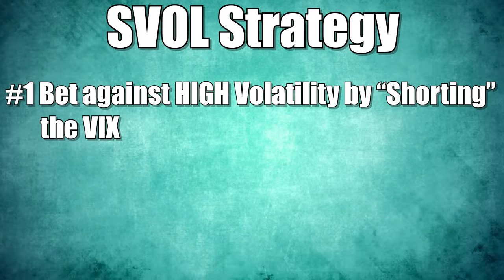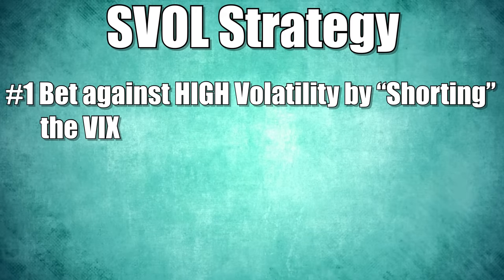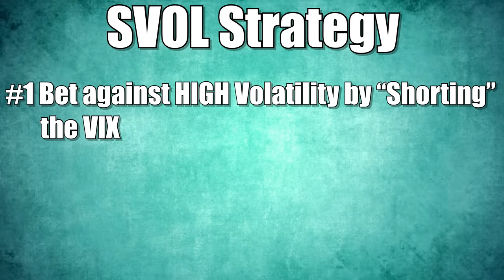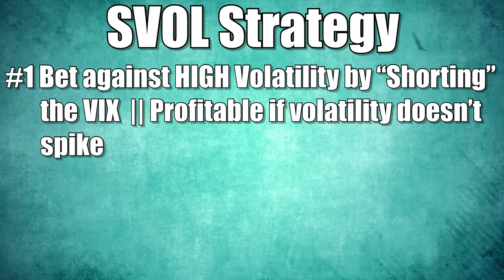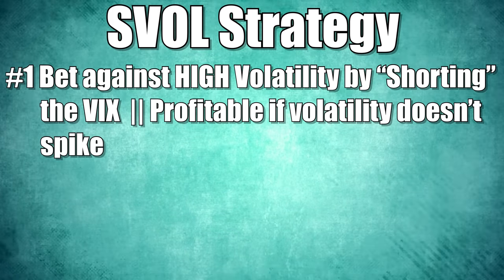SVOL's strategy is a multi-step approach. Number one, they bet volatility will stay low and short the VIX index with VIX futures contracts. Instead of betting that the VIX will go up, they're betting that the VIX will stay low — aka volatility will be low — so they are shorting the index. As long as volatility stays low or doesn't spike, the futures contract is profitable and they distribute income from the profits on a monthly basis.